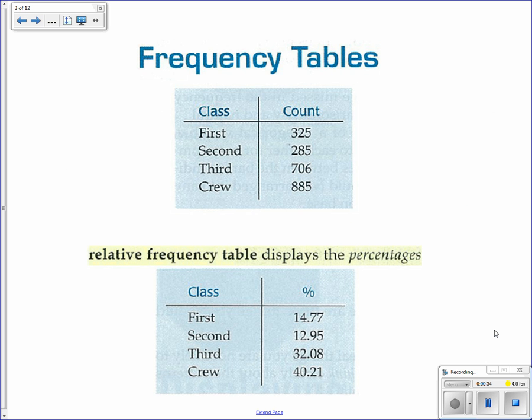The first way of displaying categorical data is in a frequency table, where you have the different categories and how many are in each one. Very related is a relative frequency table. Whenever you see relative frequency, you should think of percentages. So a relative frequency table has the categories here and the percents on this side.